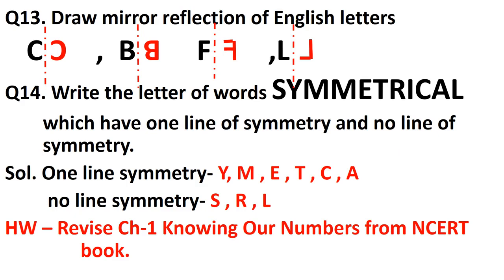Question number fourteen: write the letters of the word SYMMETRY which have one line of symmetry and which have no line of symmetry. Letters with one line of symmetry are Y, M, E, T, and A. Letters with no line of symmetry are S, R, and L. Letter I is left out because it has two lines of symmetry, and the question only asks for one line and no line of symmetry.